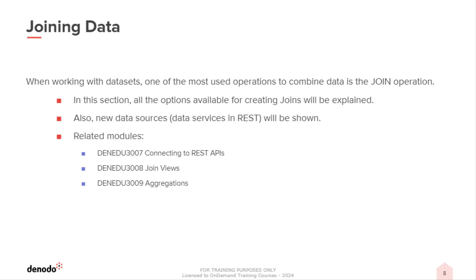In this section of the course, we will continue to improve our knowledge with one of the most important operations that combines data: the join operation. We'll start by explaining new data sources related to online data services, where you'll learn how to combine data from databases with data from new online sources. This kind of combination is very important for any company, since it allows you to combine on-premise data with data coming from cloud systems or external providers.